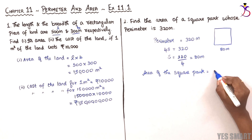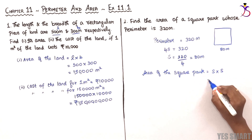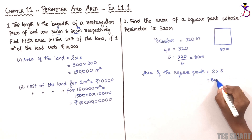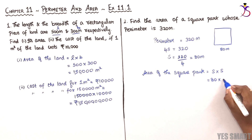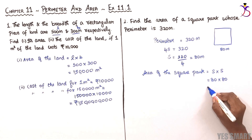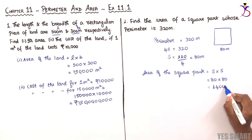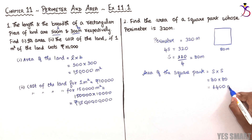Area of a square equals side into side, which is 80 into 80, equal to 6,400 meter square.